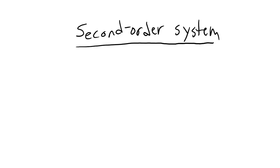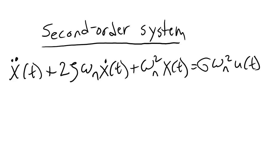Now suppose your system is instead a second order system. A second order system equation looks like this. Here x(t) is the output signal and u(t) is the input signal, just like for the first order system. Notice that in this equation we have the second derivative of x(t) — that's why this is called a second order system. In this equation there are three constants: the damping ratio zeta, the natural frequency omega_n, and the gain g. If we could find values for g, omega_n, and zeta, we would have a complete model of our system.